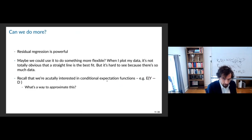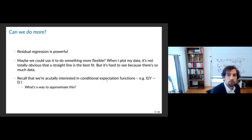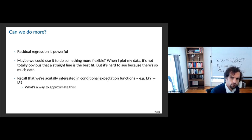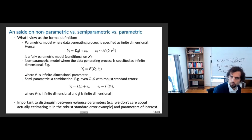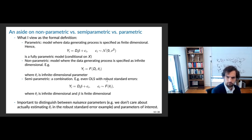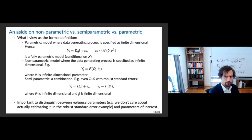Residual regression was really powerful and it would be really nice to do something more flexible. When I plotted that data it wasn't totally obvious that a straight line is the line of best fit, and it's hard to know given how much data there is. Is there a better way to approximate the conditional expectation function? As an aside — because I think this typically doesn't get defined to people — let me define the distinctions between parametric, semi-parametric, and non-parametric.